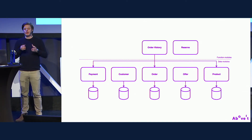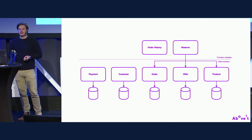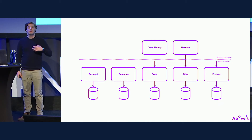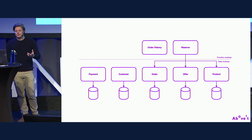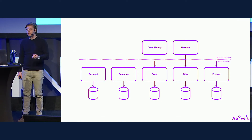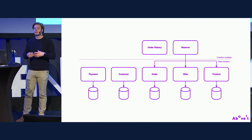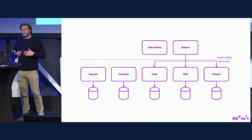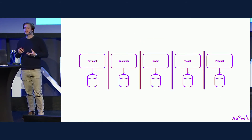Each module is responsible for its own data but keeps references to other data. Similarly, when a client wishes to reserve a trip, the reserve module performs all necessary actions and returns the finished order to the client. These function modules exist to make the API easier to use — instead of a customer application performing three separate API calls just to reserve an order, it only needs to make one.